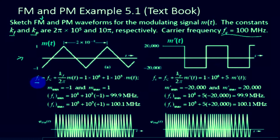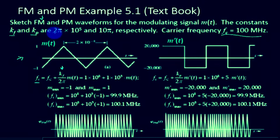The instantaneous frequency Fi is equal to the carrier frequency Fc plus Kf over 2 pi times M of t. We are talking about frequency in Hz rather than radians per second omega. Kf is given as 2 times 10 to the power of 5, so we divide by 2 pi and then evaluate the message signal.